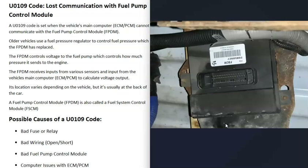When you get a U0109 code, the vehicle's main computer — the ECM or the PCM — can't communicate with the fuel pump control module anymore.